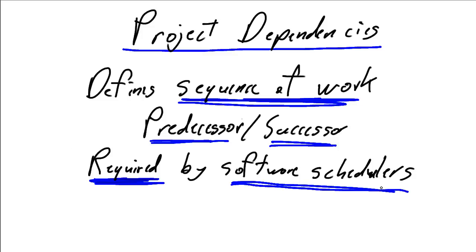You could almost say creating the project dependencies is an artificial task that we make ourselves do to make our software schedulers work, but that's a fact of life. All projects, or any project of any significant size, is going to need software, so therefore we need to be prepared to define our project dependencies.